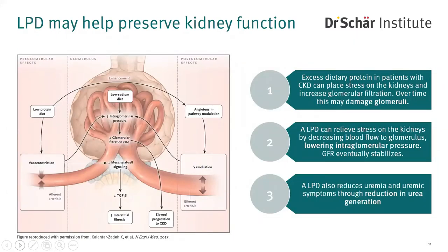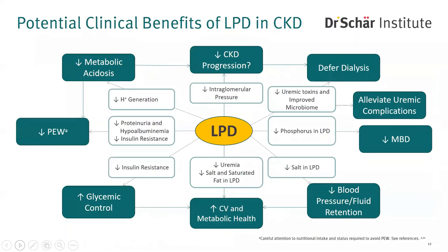A low-protein diet reduces blood flow to the glomerulus, lowering intraglomerular pressure, which eventually stabilizes GFR and preserves kidney function. A low-protein diet also reduces uremia and uremic symptoms through decreased urea generation. On the other hand, excessive protein intake places stress on the kidneys and over time reduces its function. You can see the impact of excessively high protein intake among bodybuilders and athletes who have consumed extremely high amounts of protein for extended periods, which oftentimes leads to kidney failure. It's important that patients understand how monitoring key nutrients like protein, phosphorus, and sodium can play a role in delaying dialysis.